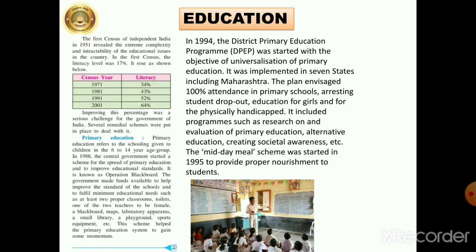Some children are sent to work; girls used to get married at a very early age. So the main aim was education for girls also, and education for the physically handicapped. It included programs such as research and evaluation of primary education, alternative education, creating societal awareness, and so on.